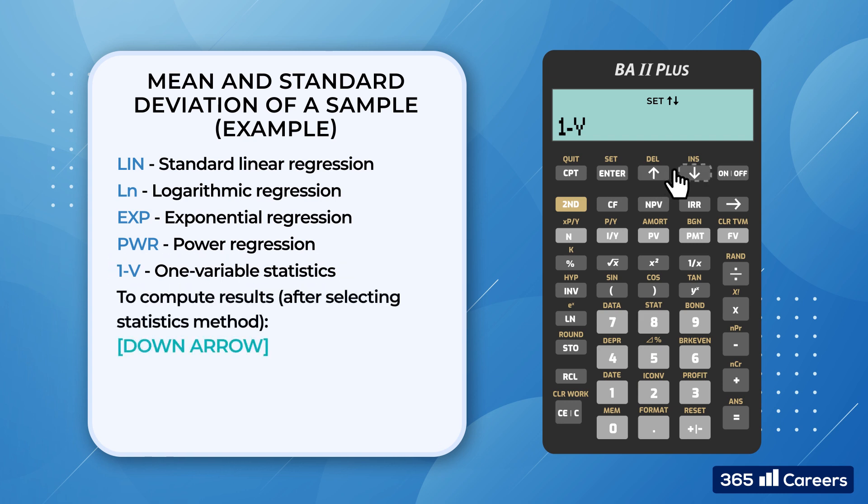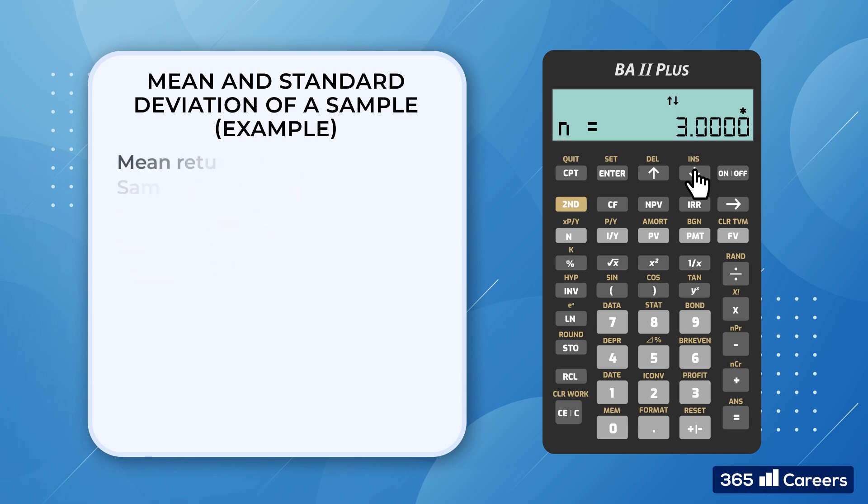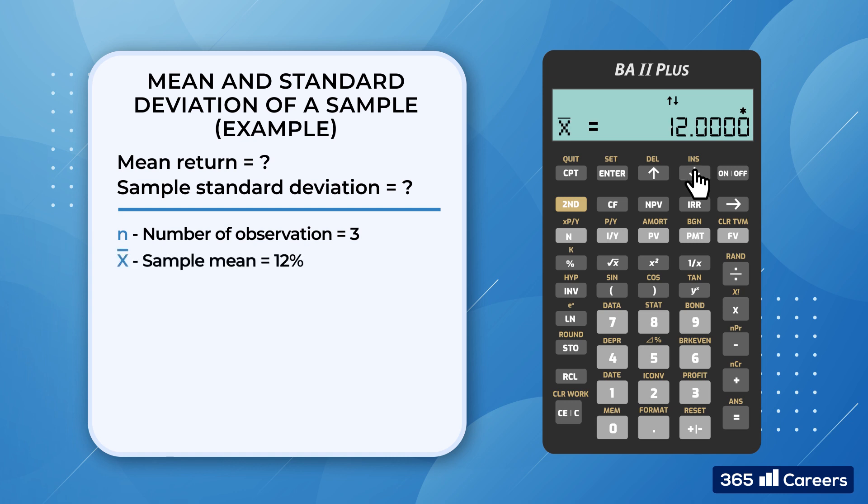Once we select it, we press the down arrow to access the statistical analysis of the data. The calculator auto-computes the output, so there is no need to press the CPT button. Let's examine the results. N is the number of observations, which in our case is 3. Then, we have x-bar, which is the sample mean. It equals 12. This answers the first part of the question.